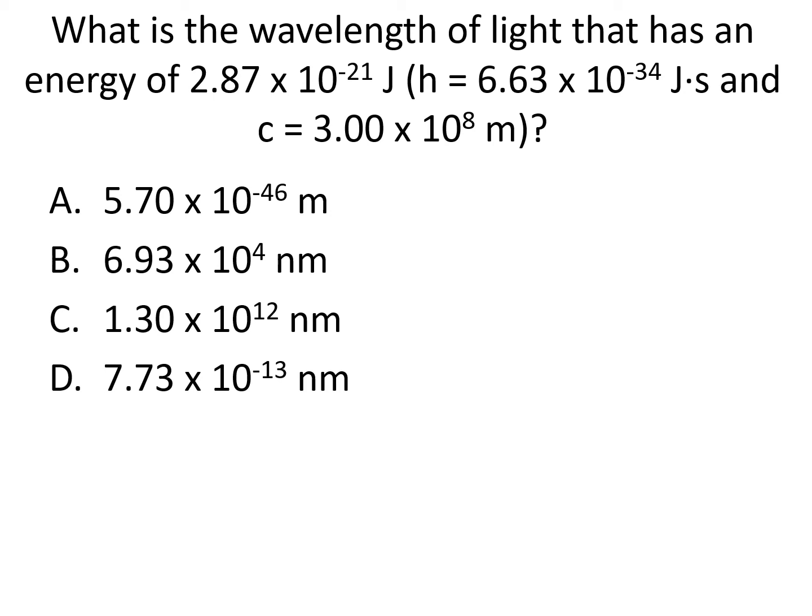What is the wavelength of light that has an energy of 2.87 times 10 to the minus 21 joules? h is equal to 6.63 times 10 to the minus 34 joules times seconds. And c is equal to 3.00 times 10 to the 8 meters per second.